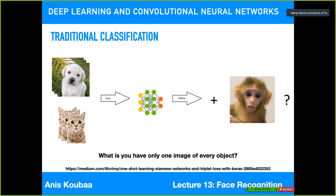Another issue is that what if you have only one image for every object? If you have new employees, you cannot ask everyone to provide 1,000 images of themselves so you can train a neural network. There are contexts that require only a minimal number of images for training.